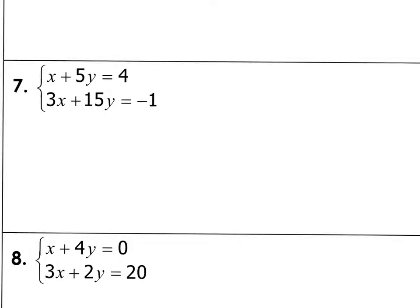In number 7, we don't have one of the variables isolated yet on the system, but I can see here that it's going to be very easy to get this x by itself. So we're going to go ahead and subtract 5y from both sides to get this to be x equals 4 minus 5y.